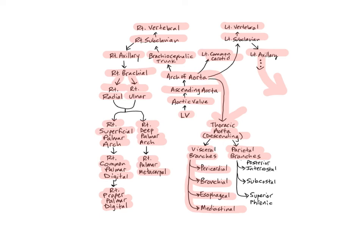The parietal branches include the posterior intercostal arteries, which supply the skin, muscles, and ribs of the thoracic wall, along with the thoracic vertebrae, meninges, spinal cord, and mammary glands. The intercostals consist of nine pairs of arteries that branch off each side of the thoracic aorta and pass through the intercostal spaces between the ribs — which is what the word intercostal means. The parietal branches also include the subcostal arteries, which supply the skin, muscles, and ribs, along with the T12 vertebrae, meninges, and spinal cord, and the superior phrenic arteries, which branch off the lower portion of the thoracic aorta to supply the upper diaphragm and pleural membrane covering the diaphragm.